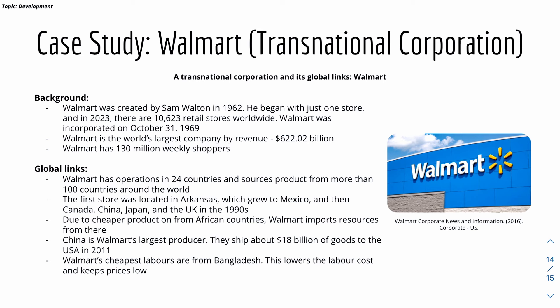Now we have our case study — a transnational corporation and its global links — and we'll look at Walmart. Walmart was created by Sam Walton in 1962, beginning with just one store, and in the present day there are over 10,000 stores worldwide. Walmart has operations in 24 countries and sources products from more than 100 countries around the world. The first store was in the US, which grew to Mexico and then other countries in the 1990s. Walmart also has certain largest factories or production operations in parts of the world due to cheaper prices.